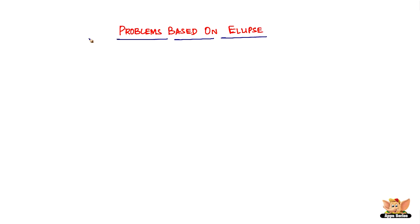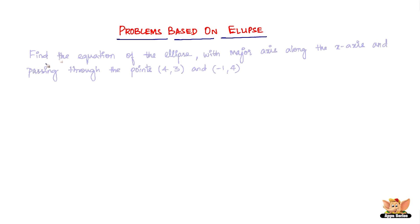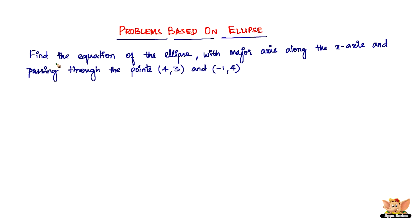In this video, let us continue to solve more problems based on ellipse. We've got a question which reads like this: find the equation of the ellipse with major axes along the x-axis and passing through the points (4, 3) and (-1, 4).